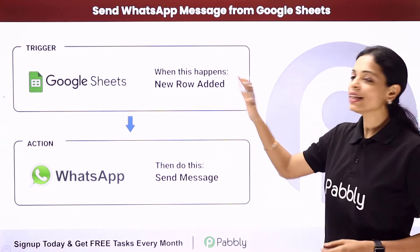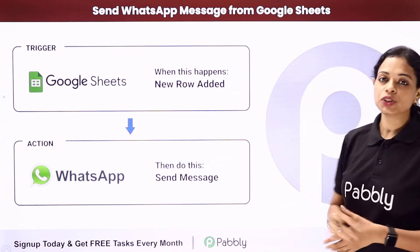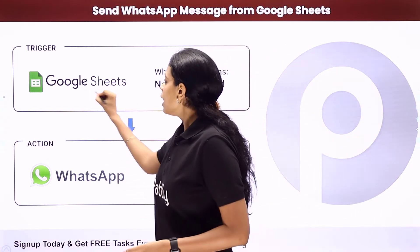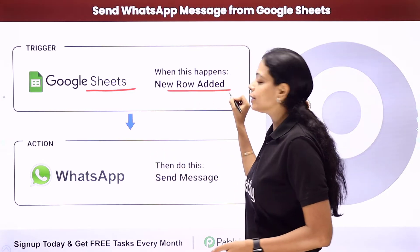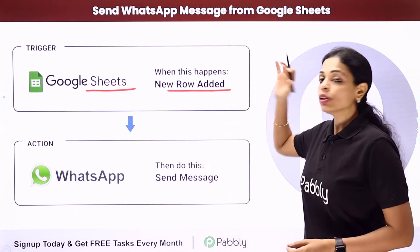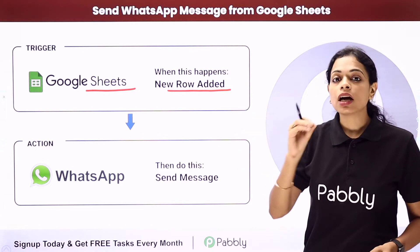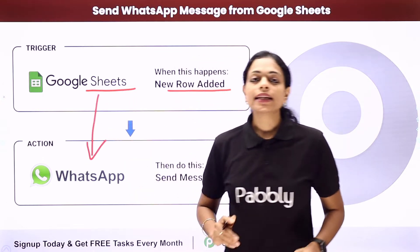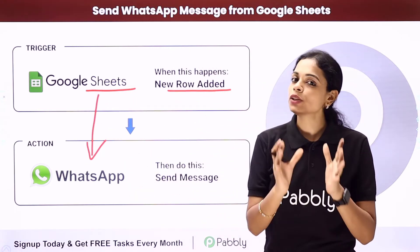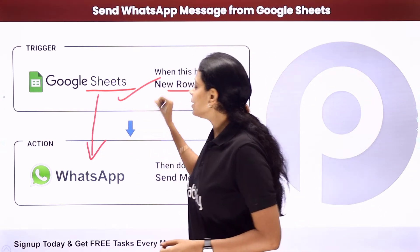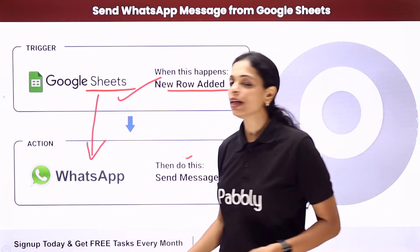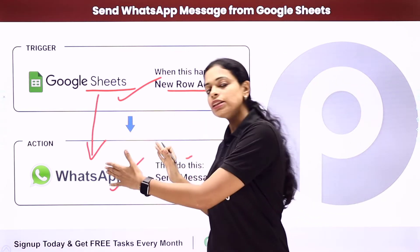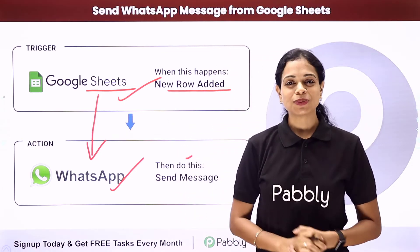In this video, we are going to see how to send WhatsApp messages from Google Sheets. Let's say that you are using Google Sheets to manage your data, and you want that every time a new row is added along with the information of your client, this client should be sent a WhatsApp message. How can you do that? By integrating these two applications using Pabbly Connect software, where your trigger application would be Google Sheets and your action application would be WhatsApp. To understand how to automate this entire process, let me take you to my screen.